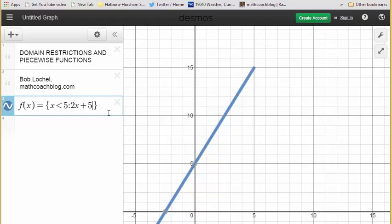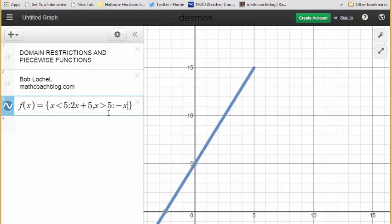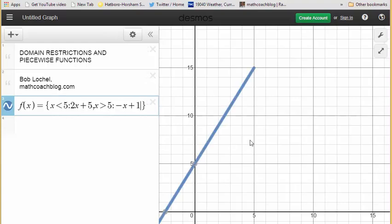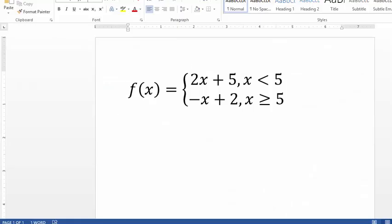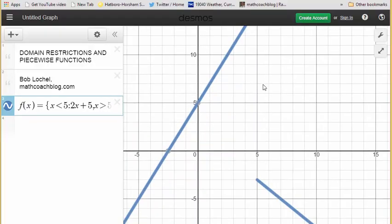Here's how I get the second half of it. Type a comma after that. Now I'm going to tell it where x is greater than 5 that I would like it to do negative x plus 2.